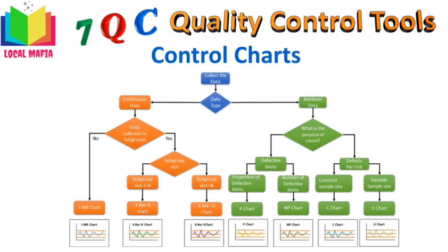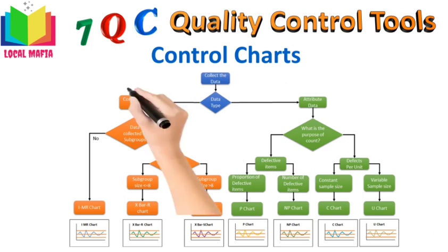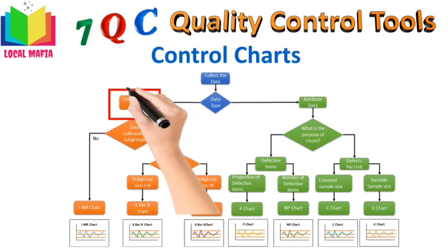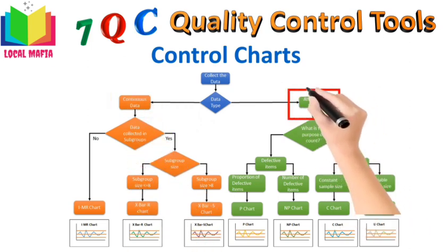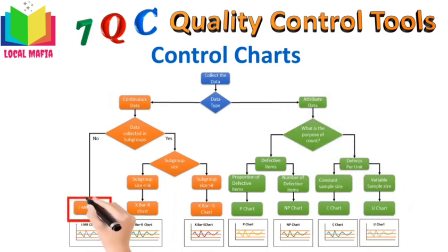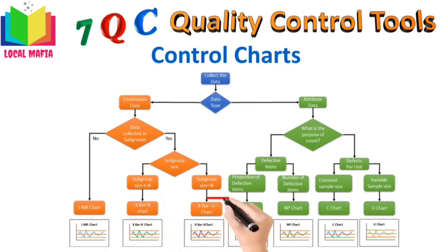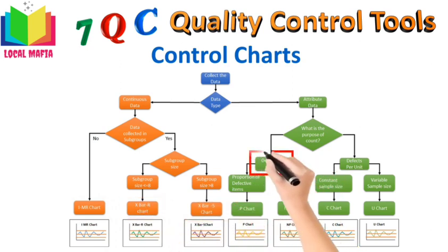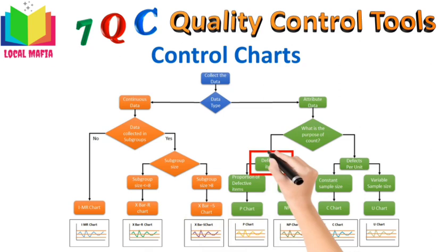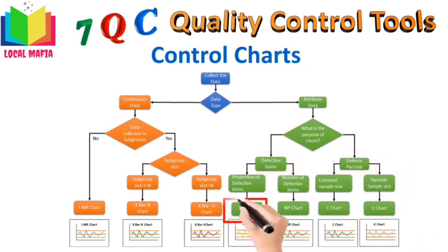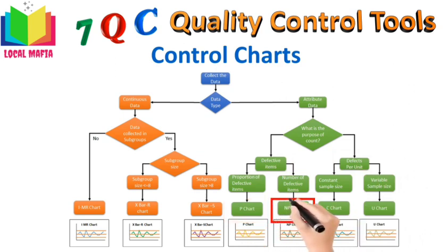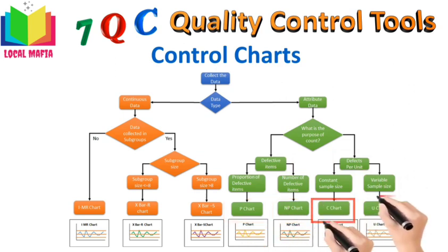If your data is continuous — meaning it can be measured on a continuous scale like a thermometer, weighing scale, or tape — we use continuous data charts: the IMR chart, the X-bar R-bar chart, and the X-bar S chart. If your data is attribute data that can be counted, like good or defective parts, we use attribute charts. Under defective items, we have the P chart and NP chart. Under defects per unit, we have the C chart and U chart.